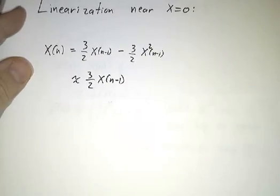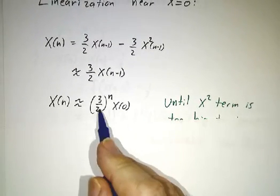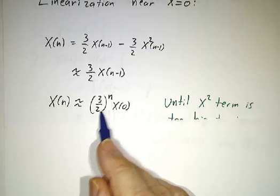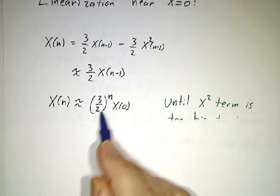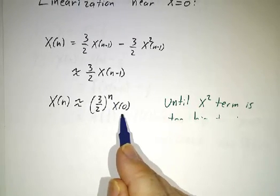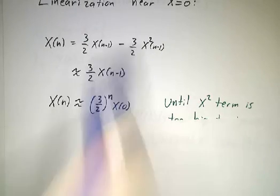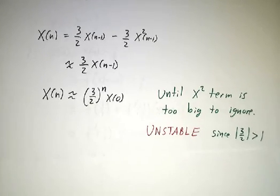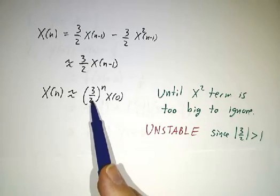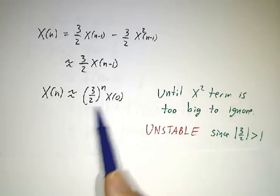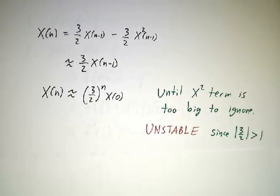In that case, every day we multiply x by 3 halves, and we wind up with 3 halves to the nth power times what we started. And it keeps growing like 3 halves to the n until eventually x is big enough that the quadratic term can no longer be ignored. We call this unstable because 3 halves is bigger than 1. When 3 halves is bigger than 1, powers of 3 halves grow, and we're running away from 0, not towards 0.